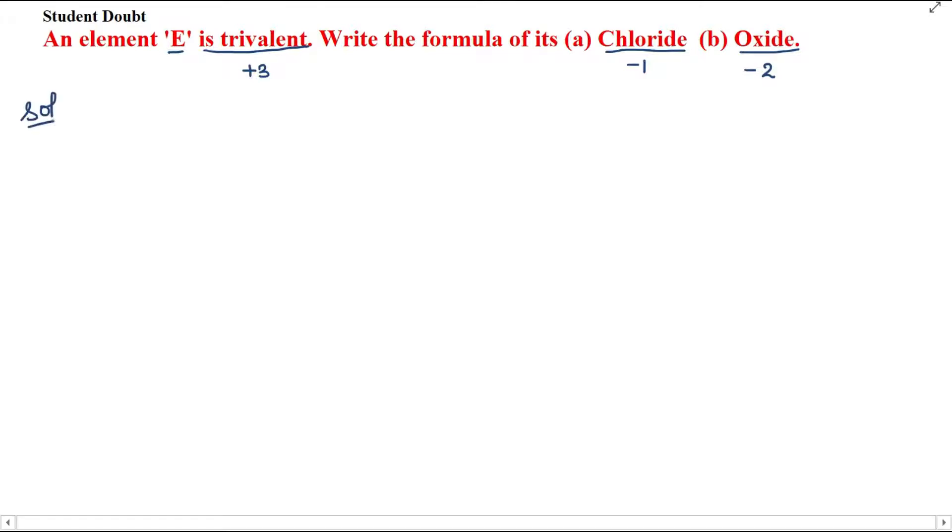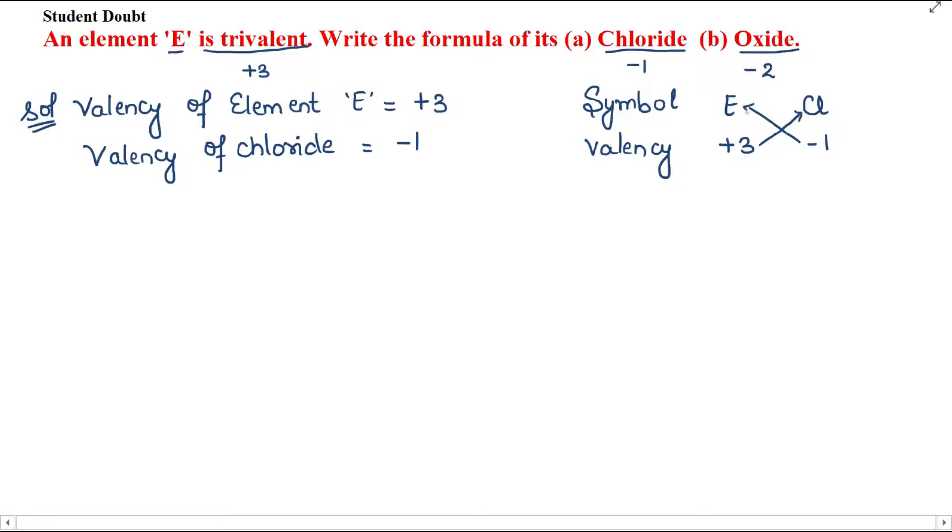We will use the cross-valency method. The valency of element E is plus 3. First, we will solve for the chloride compound. Chloride ions have a valency of minus 1. We will solve it with the cross-valency method. We mention all the symbols. The cation E is written first, then the anion chloride. We mention their valencies: E has plus 3, chloride has minus 1.